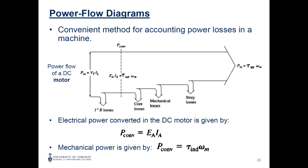For power flow in the motor, power flows from the electric source to the mechanical output. The first losses are the I²R copper losses. Then we have the power flowing across the air gap from stator to rotor — we call this the converted power. It equals P = E × I_A = torque_induced × omega.